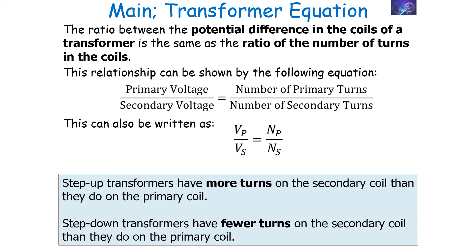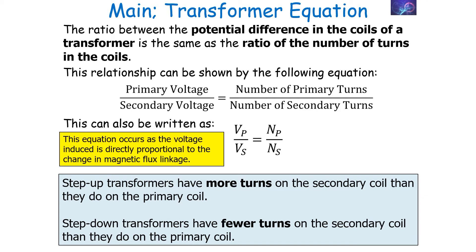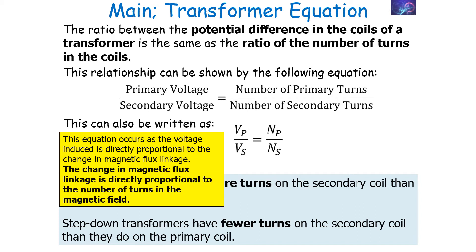A step-up transformer will have more turns on the secondary coil than on the primary coil, and step-down transformers have fewer turns on the secondary coil compared to the primary coil. This works because the voltage induced is directly proportional to the rate of change of flux linkage — Faraday's law of induction. The change in magnetic flux linkage is directly proportional to the number of turns, leading to our transformer equation.